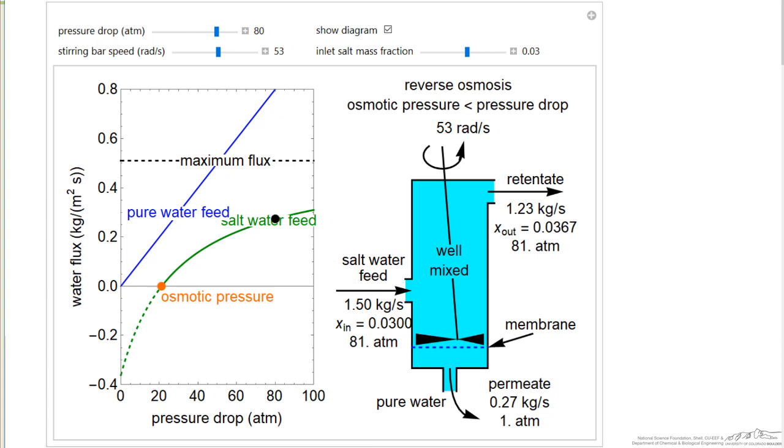For example, if I lower the pressure drop enough, I no longer have reverse osmosis but have osmosis. Notice the permeate flow rate is negative, so I'm actually pulling pure water through the membrane because the chemical potential is higher.